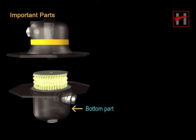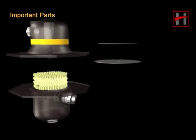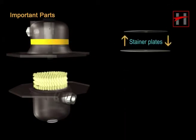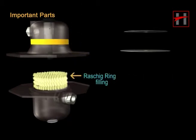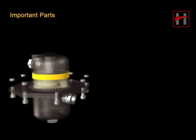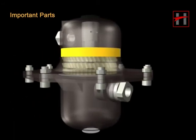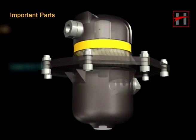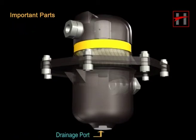Bottom part, top part, strainer plates, Raschig ring filling, inlet port A1, outlet port A2, drainage port, and the collecting chamber.